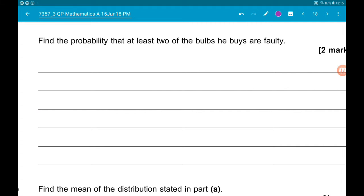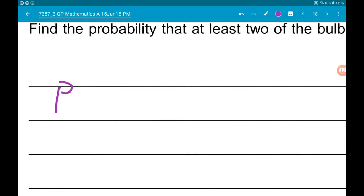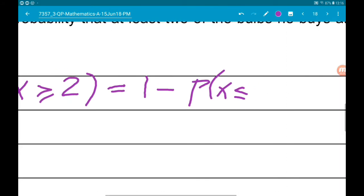Part C wants us to find the probability that at least two of the bulbs he buys are faulty. So this then is the probability X is greater than or equal to 2. Now that is 1 minus the probability that X is less than or equal to 1.